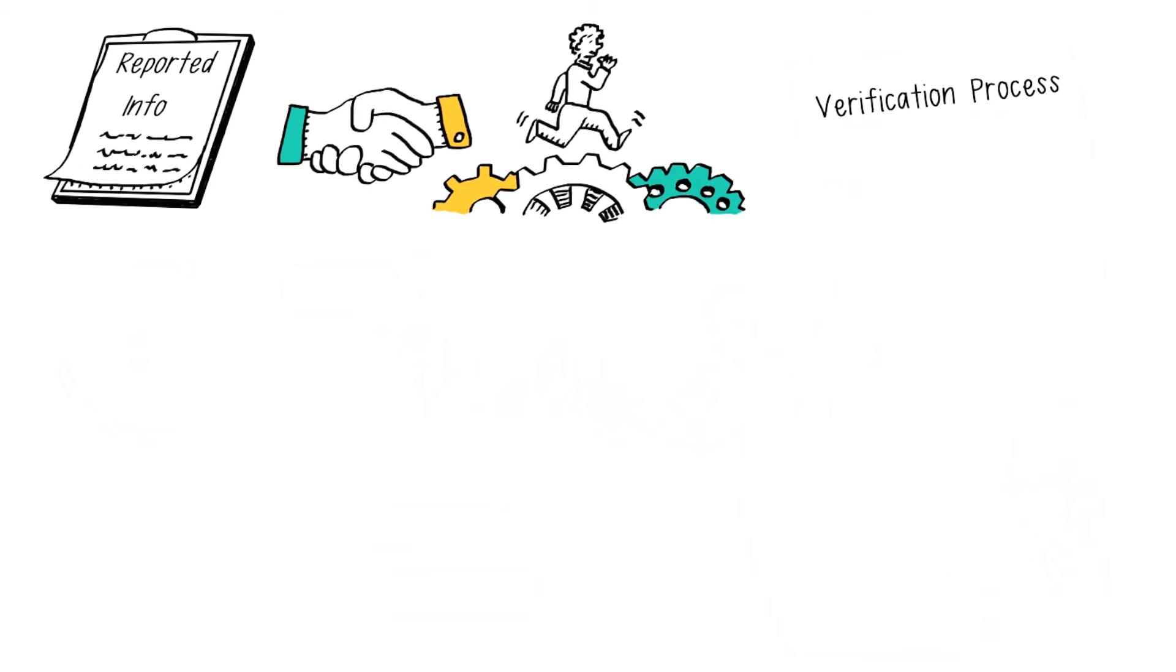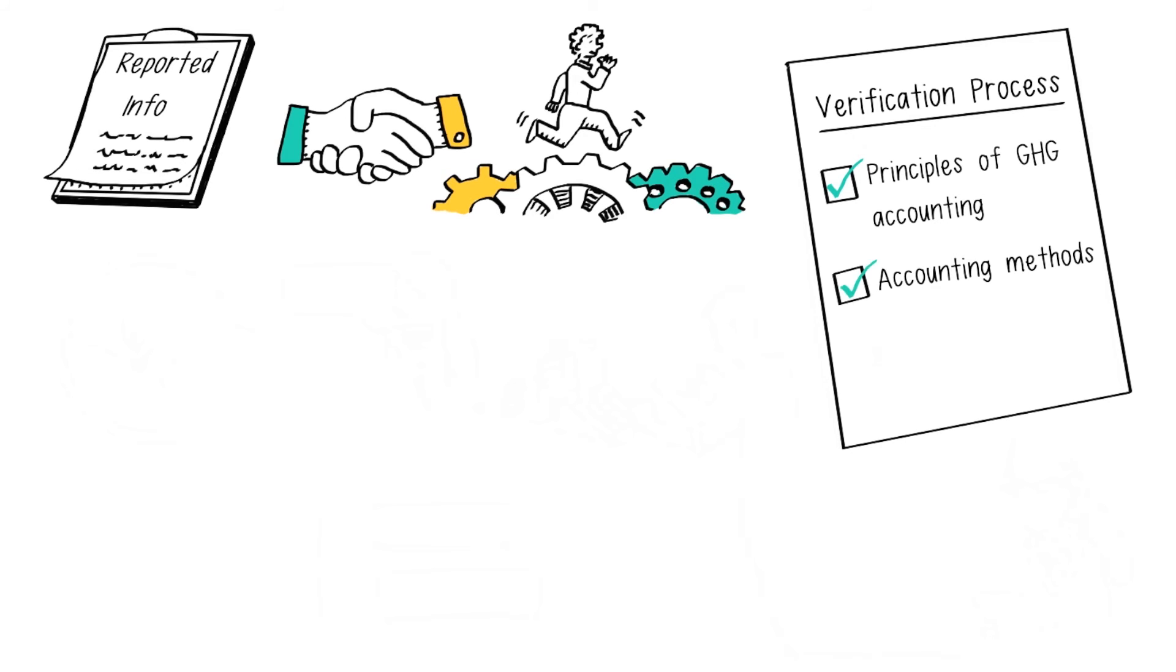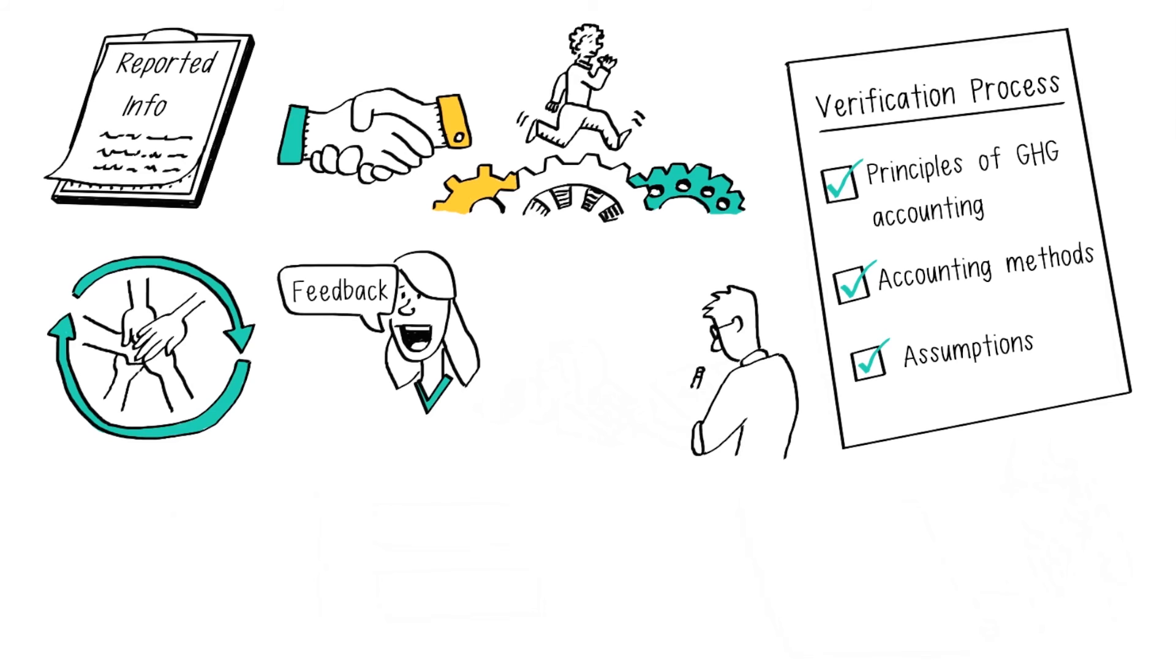The verification process involves an evaluation of whether the principles of GHG accounting have been met and a review of users' justifications for having chosen the accounting methods and assumptions they did. It is a cooperative, iterative process that provides feedback and promotes the improvement of accounting practices.